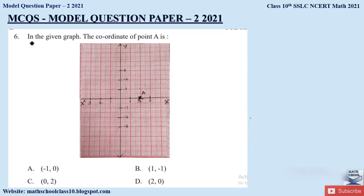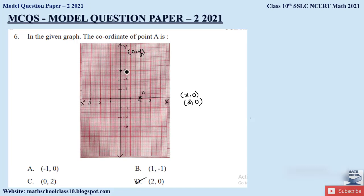Question 6: In the given graph, what is the coordinate of point A? Point A is on the x-axis. Whenever a point is on the x-axis, its coordinates are of the form (x, 0). Here the point is located at x = 2, so the coordinate is (2, 0). The correct option is option D. Similarly, a point on the y-axis has the form (0, y).